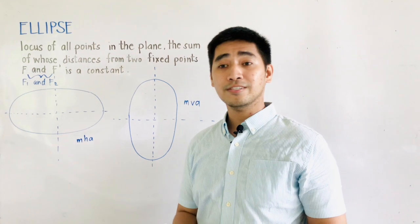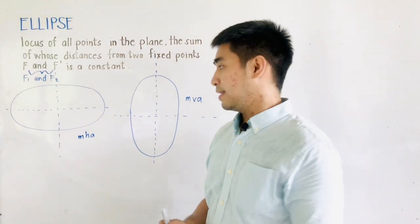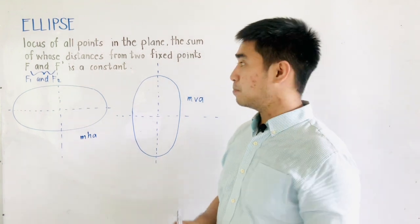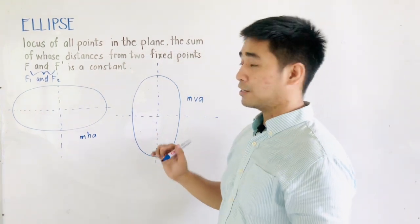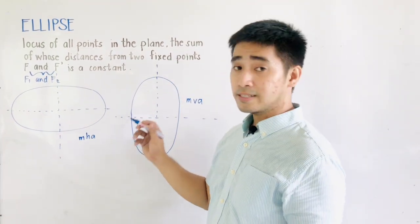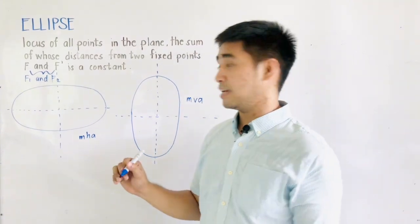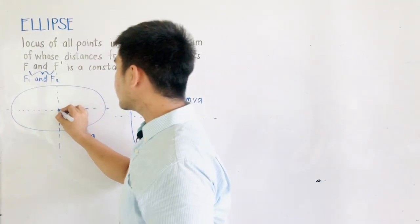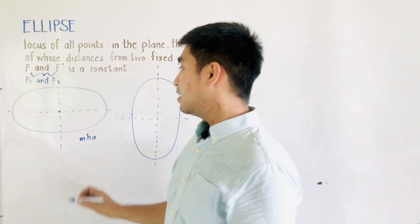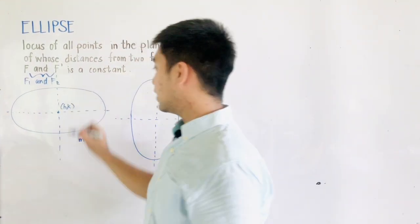For now, let us first discuss the parts of an ellipse. Based on the definition, the ellipse is the locus of all points in the plane, the sum of whose distances from two fixed points F and F' is a constant. This is the center of the ellipse, located at H and K.